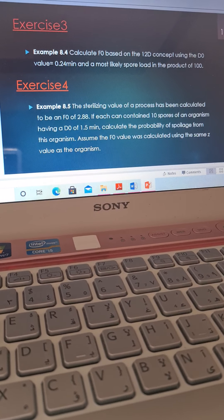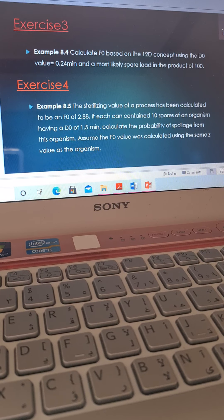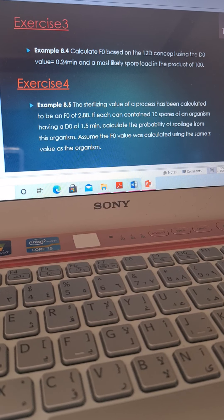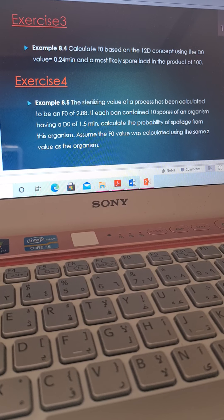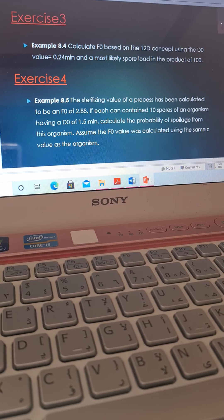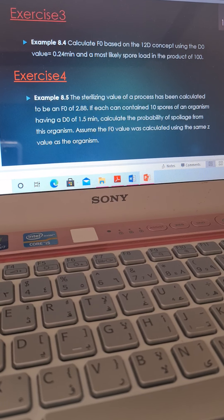So now exercises 3 and 4. Exercise 3, we have to calculate F0 based on the 12D concept using the D0 value equals 0.24 minutes and a most likely spore load in the product of 100.